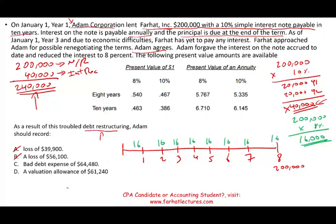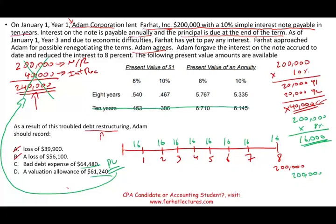Now, what's the present value of this new note receivable? I find the present value and compare it to what I have on my books — $240,000 — replacing it with the new note. The difference will be either $64,480 or $61,240. To find the present value, I start with the $200,000 lump sum, which I'll receive only once, so I use the present value of $1 table.